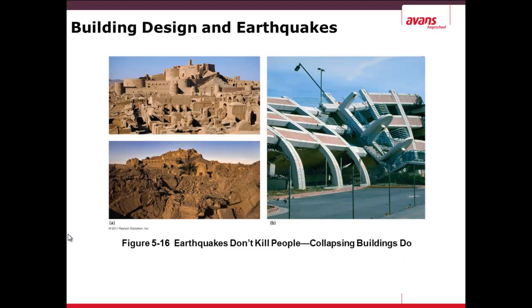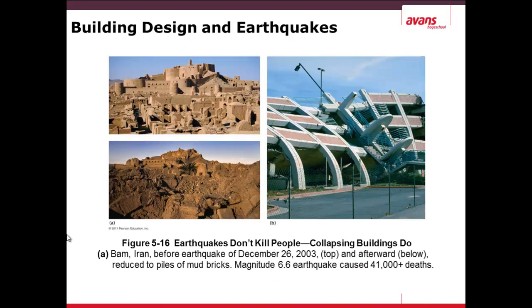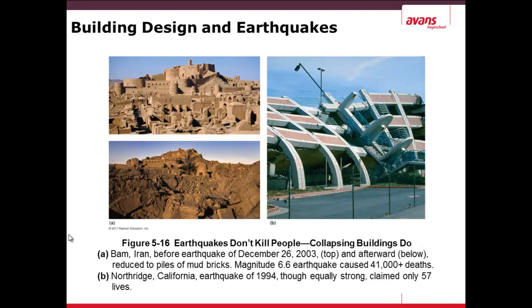Building design has come a long way in recent decades. In photo A, you see an earthquake in December 2003 in the city of Bam, Iran — before and after. This city was mostly mud bricks, and a 6.6 magnitude earthquake caused more than 41,000 deaths. In photo B, an approximately equal-magnitude earthquake struck Northridge, California in 1994, and unfortunately only 57 people were killed. This difference is due to modern building techniques.